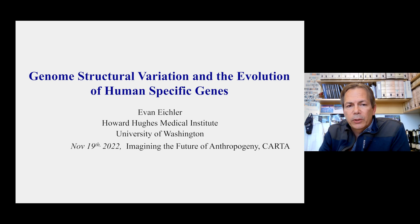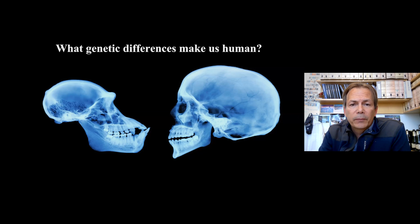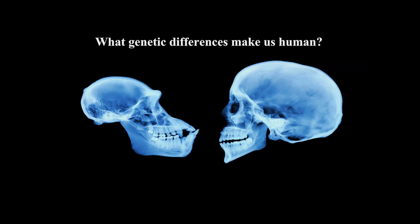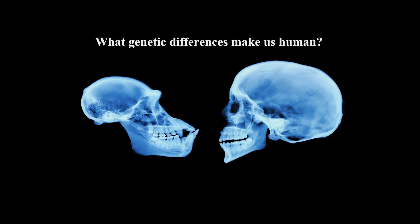It's a real pleasure to share some recent analysis regarding human-specific genes and genome structural variation. Our interest in understanding human origins stems from trying to understand the genetic differences that make us uniquely human. Of all the morphological changes that have occurred, the most interesting to us is the evolution of the human brain — particularly its expansion over the last six million years, leading to increases in neuronal count, volume, and synaptic density.